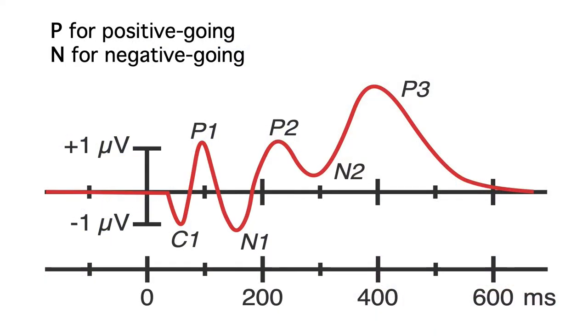The most common convention is to label the peaks with a p or n to indicate positive or negative, followed by a number, like the p3 wave shown here.